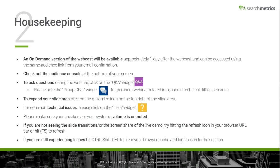Please note the group chat widget is for pertinent webinar-related info should technical difficulties arise. To expand your slide area, click on the maximize icon on the top right of the slide area. For common technical issues, please click on the help widget. Please make sure that your speakers or your system's volume is unmuted. If you're not seeing the slide transitions, try hitting the refresh icon in your browser. If you're still experiencing issues, hit Control-Shift-Delete to clear your browser cache and log back into the session.